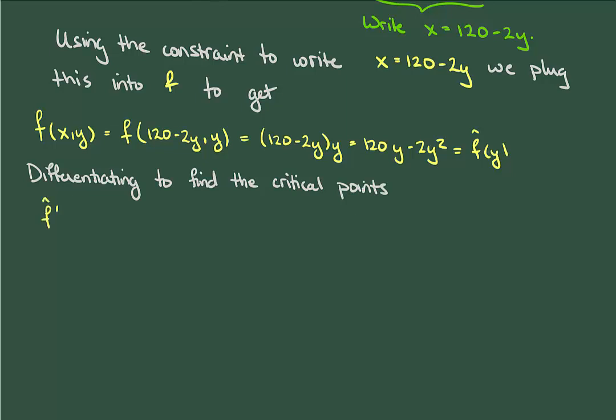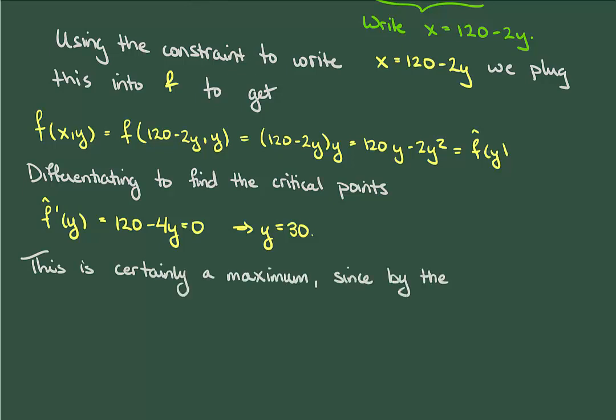Let's differentiate the function and find its critical points. That derivative is pretty easy to compute, and setting it to 0 we get y equals 30. This is definitely a maximum. Applying the second derivative test, for example, since it's so easy to differentiate, gives us f double prime of y is negative 4, which is negative.